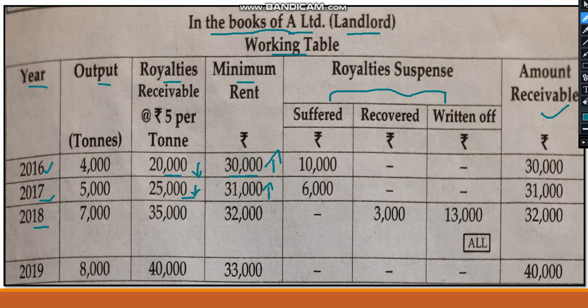In 2018, royalty is 35,000 and minimum rent is 32,000. Royalty is more and minimum rent is less — this is case number two, when royalty is more than minimum rent, so three entries apply. Also, in the recoupment column there is 13,000. This 13,000 is the loss which is not recovered. So in 2018 we also apply case number three: one entry to transfer 13,000 to profit and loss account. In 2018 there will be a total of four entries.